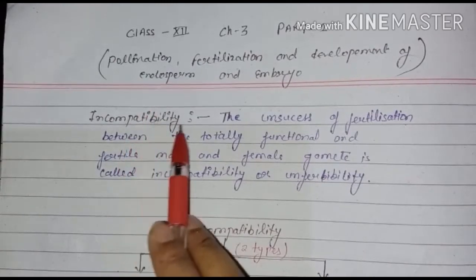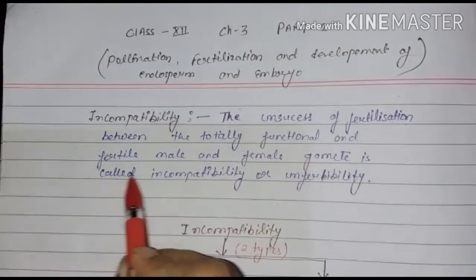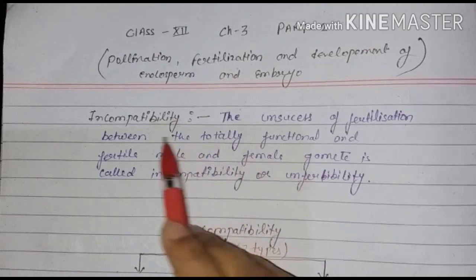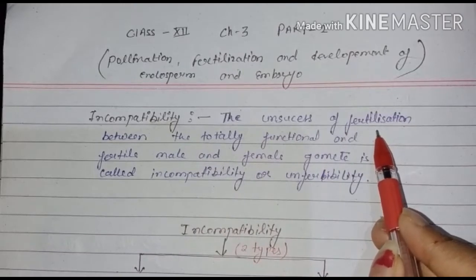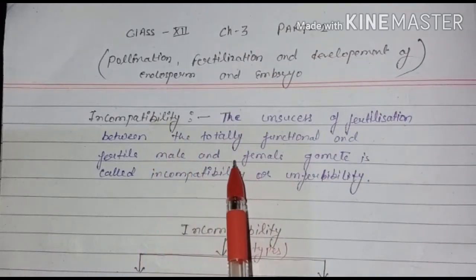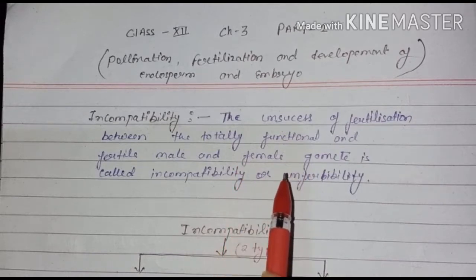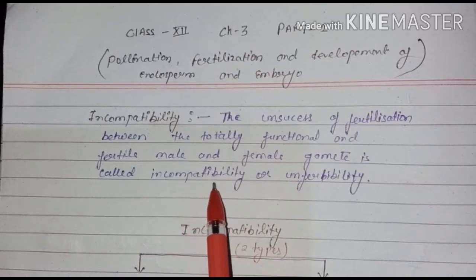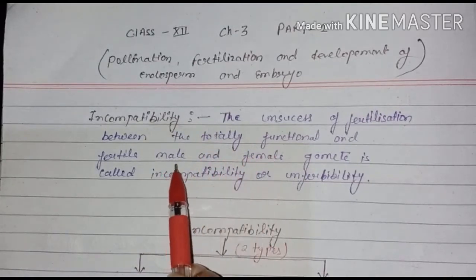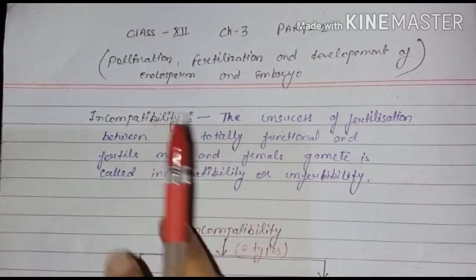Incompatibility definition: the unsuccessful fertilization between totally functional and fertile male and female gametes is called incompatibility or unfertility. Fertilization means the fusion of male gamete and female gamete to form a zygote. In incompatibility, the male and female gametes are totally functional, but they cannot fuse together to form a zygote — they are not compatible with each other.